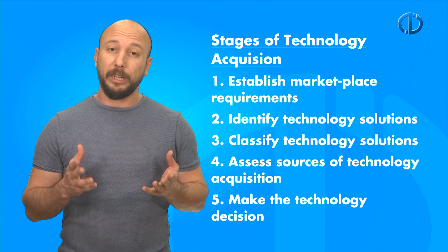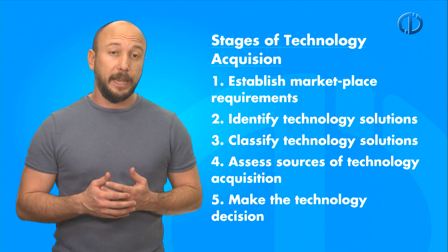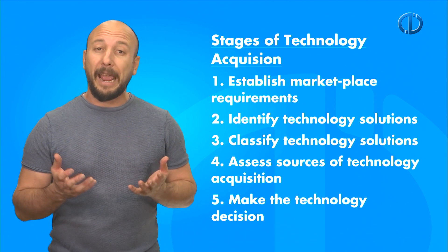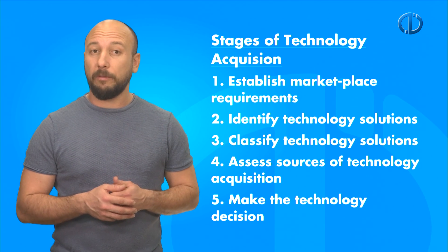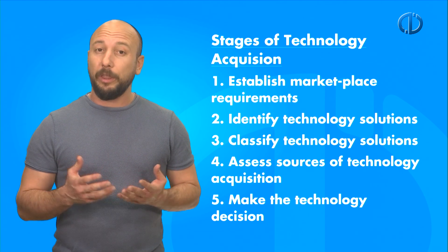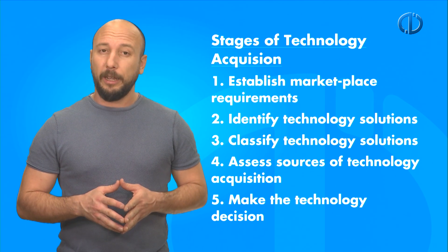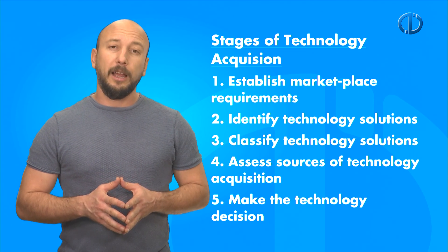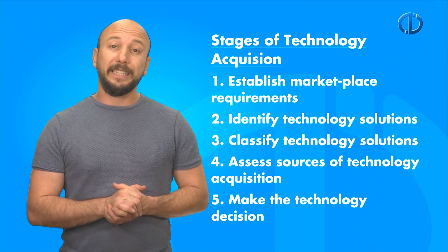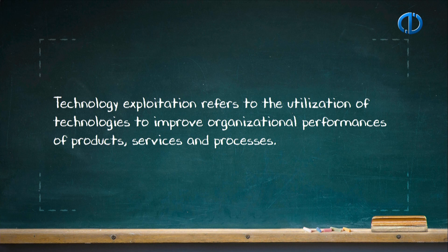Acquisition process involves a number of individuals from almost every department of the organization. Acquisition process is also assessment of the opportunities and finding the promising acquirer from the external environment. There are five stages for technology acquisition with the several tasks to accomplish: establish marketplace requirements, identify technology solutions, classify technology solutions, assess sources of technology acquisition, make the technology decision.